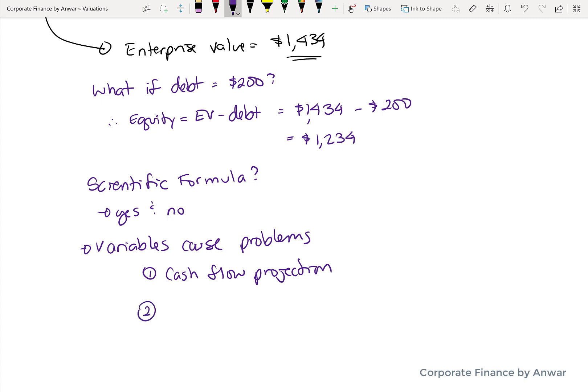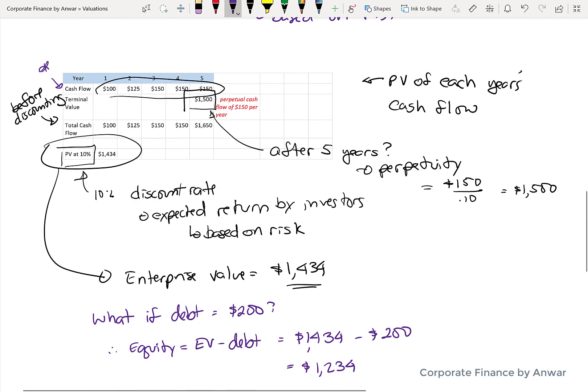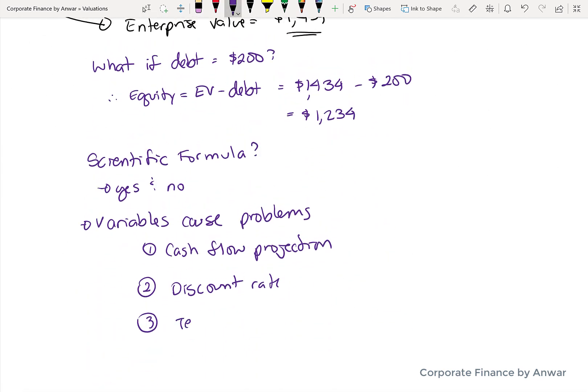The variables that can cause problems are three things. First of all, the cash flow projections, which is the annual revenues and income the company earns. Second is the discount rate, which is your estimation of what investors want as a return. And that can change over time as well, even for the same company. And the third thing is the terminal value of the company.